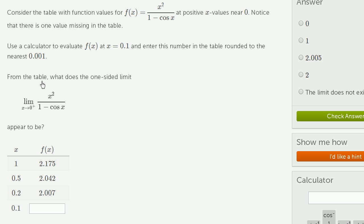This is the missing one right here. Use a calculator to evaluate f(x) at x equals 0.1 and enter this number in the table rounded to the nearest thousandth. From the table, what does the one-sided limit...